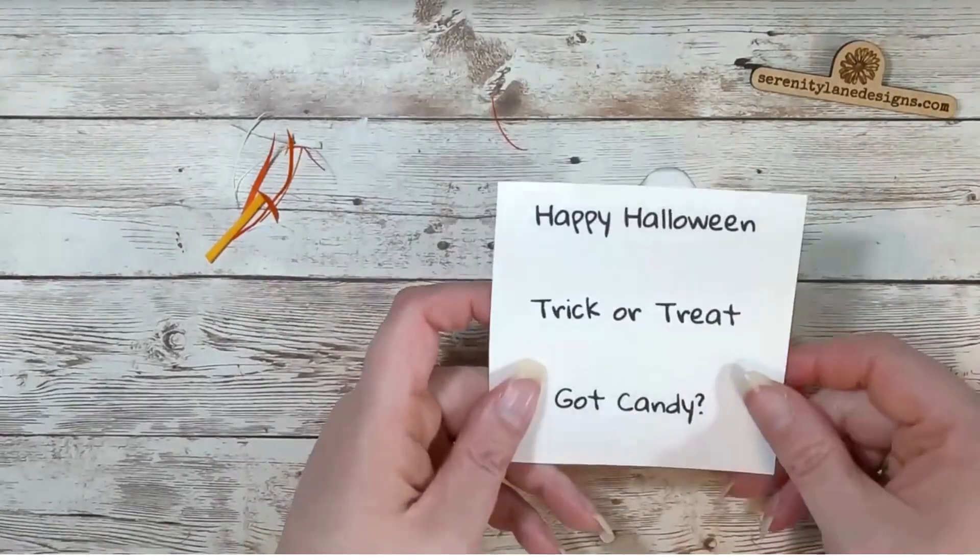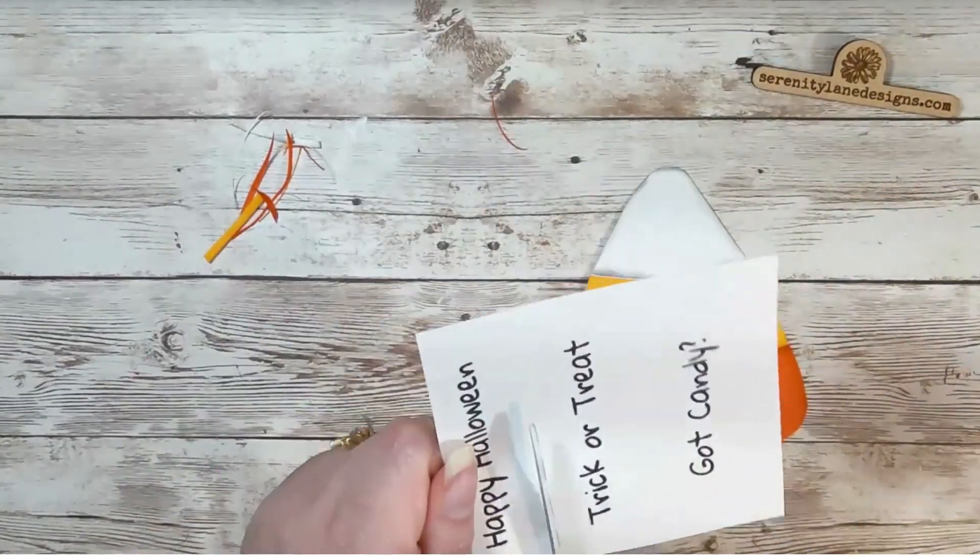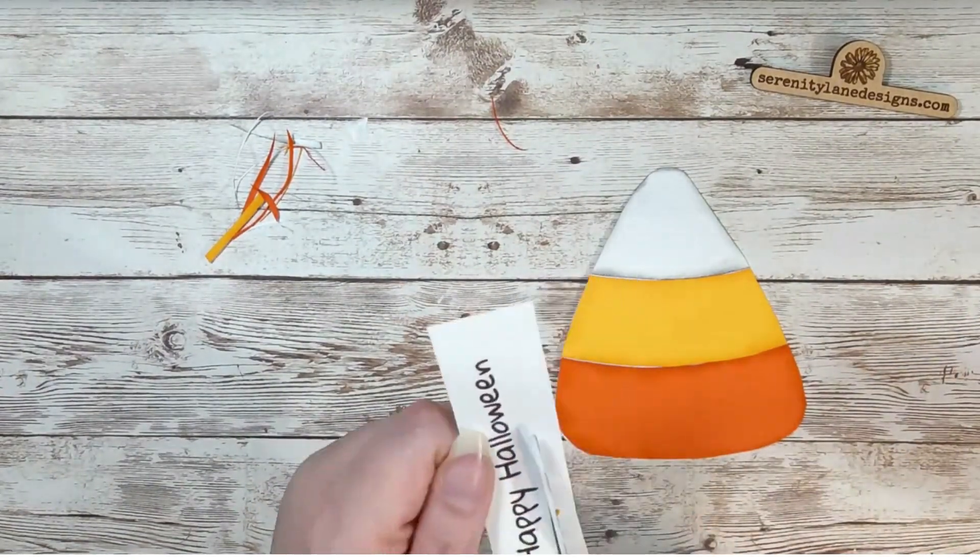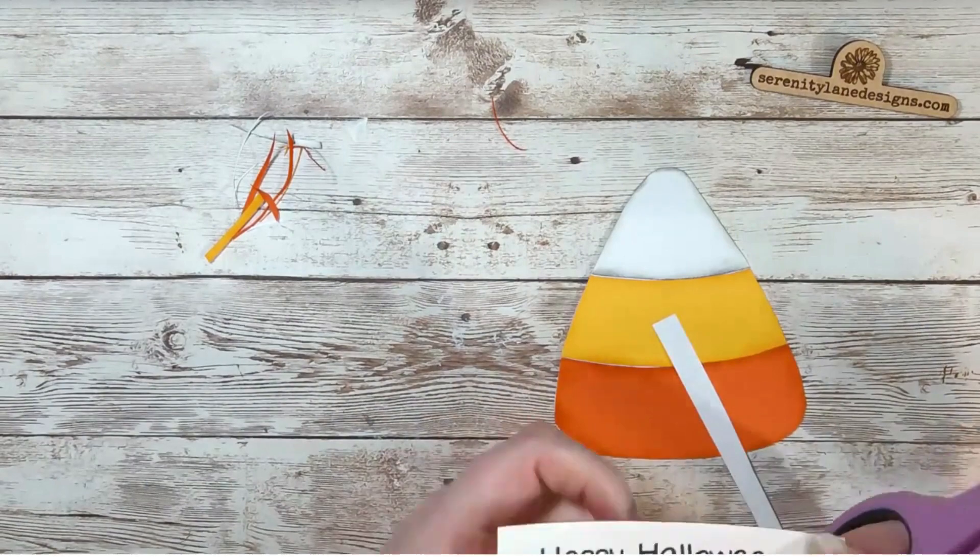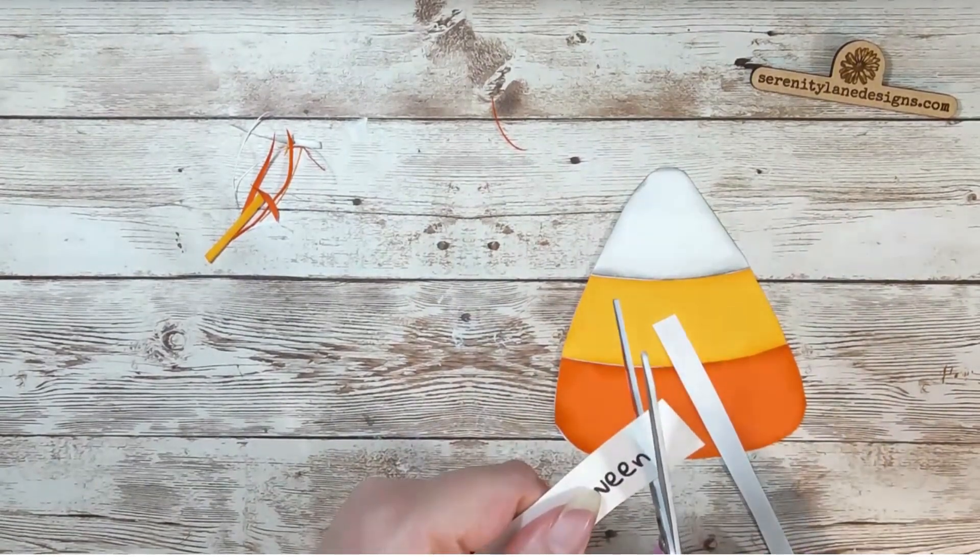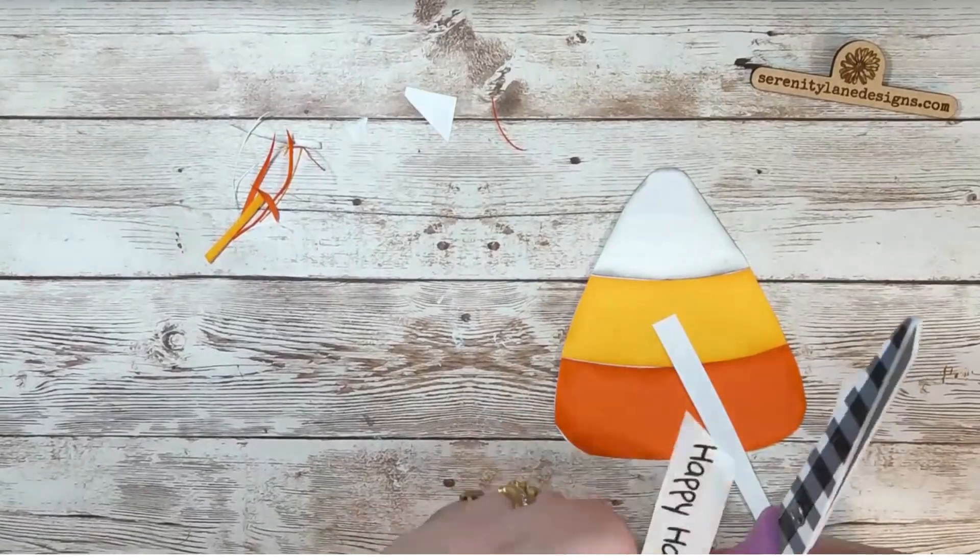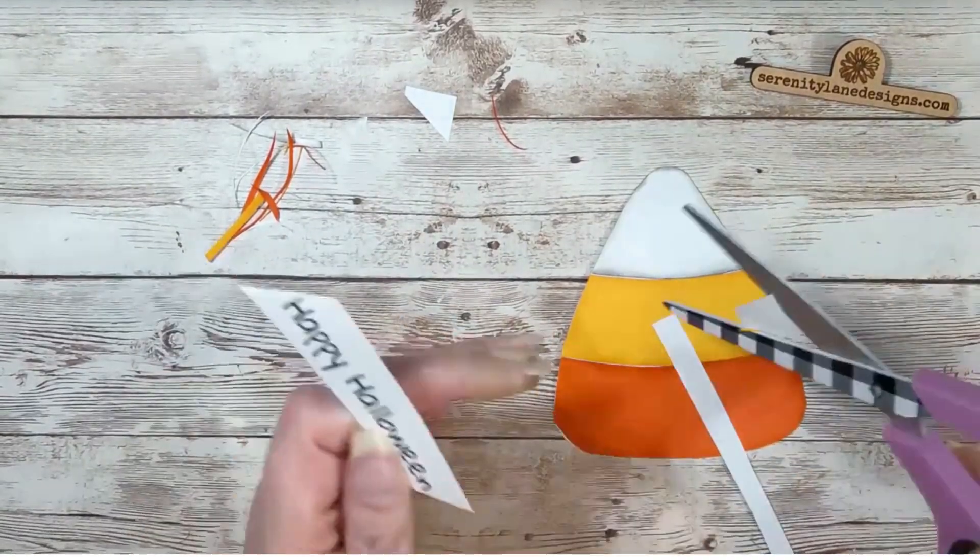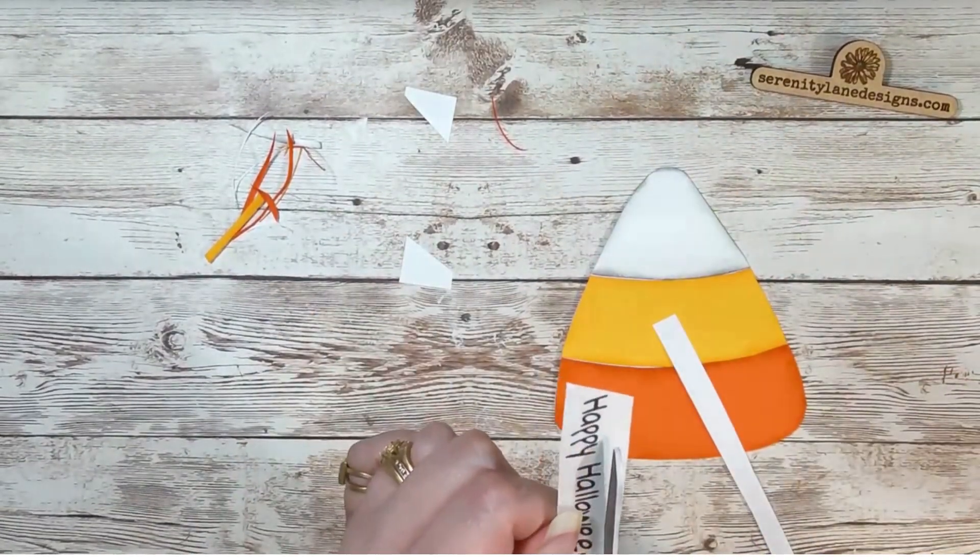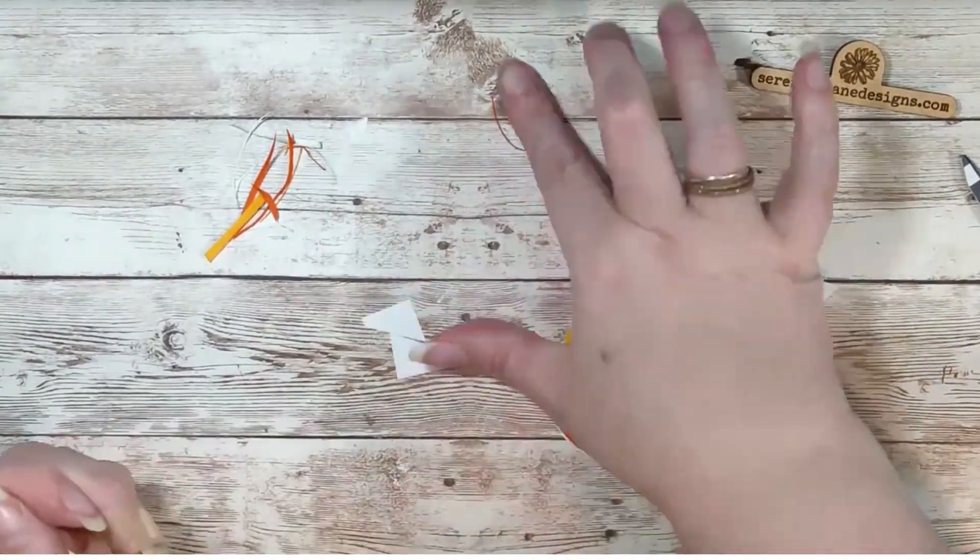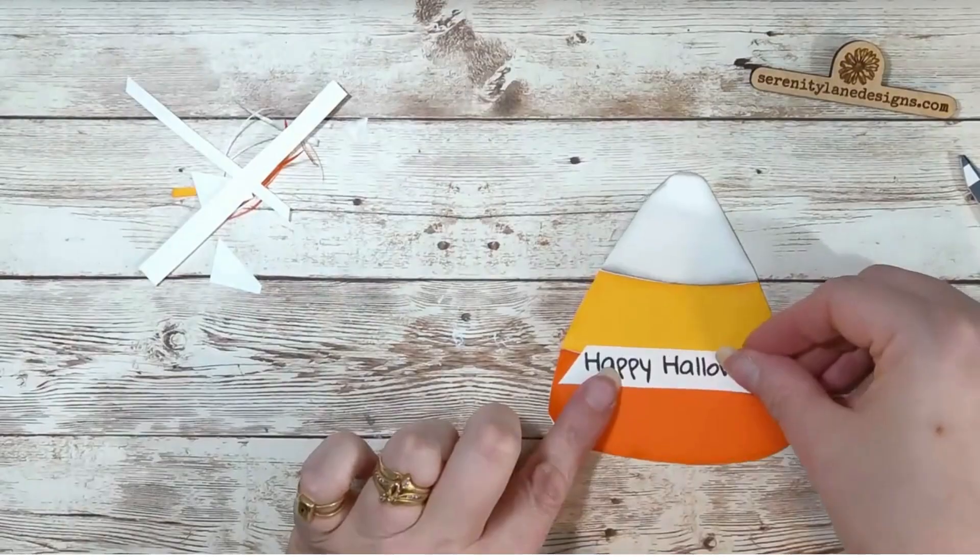Also on the printout, I included some Halloween sayings. You could cut those out and add to the card. Here I'm taking the Happy Halloween and cutting that down to size. And then I'm going to, again, ink the edges a little bit. You also could put a piece of, a different piece of cardstock behind it, make it a different color.